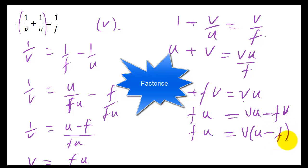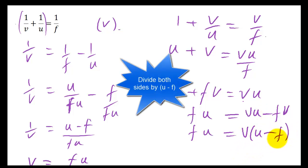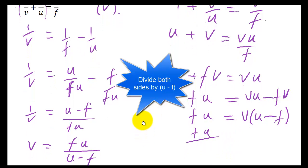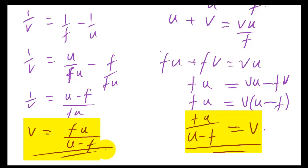And you can always check by multiplying that out again, that you factorised it properly. Now I've got V times U minus F. So we can just divide both sides by U minus F. And we get FU divided by U minus F equals V. And you can see that I have exactly the same answer.